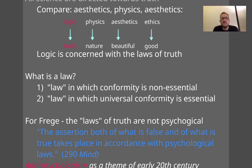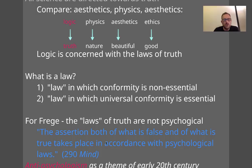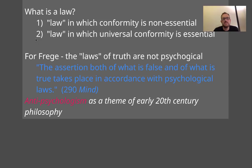But law in the sense of universal conformity really seems to be the type of laws of truth that logic is interested in articulating — the universal, unchanging, timeless laws that govern how truth functions within our statements and within our language. So right from the very beginning of this essay we see the emergence of anti-psychologism, which is a theme for the early 20th century philosophers. In particular the two philosophers we're looking at here: Frege, obviously, and Husserl, who is equally concerned with articulating arguments against psychologism — for which he was actually himself accused of doing.